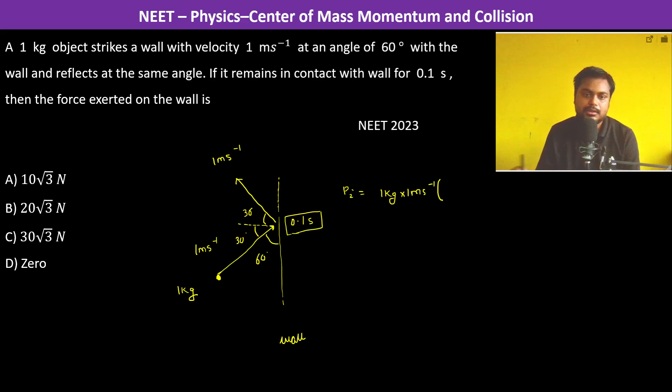Now we resolve it. So the 60 degrees, this 30 degrees in i and j, this is 30 degrees. So cos 30° i cap plus sin 30° j cap. P_final is equal to again 1 kg into 1 meter per second.